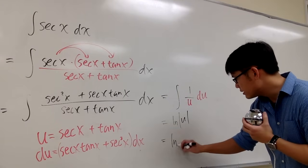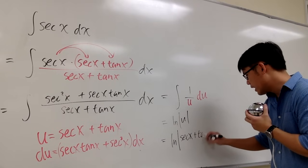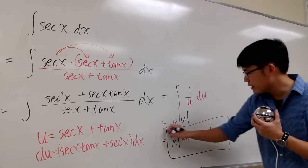which the answer is ln absolute value sec x plus tangent x. And we are done. We put a plus c.